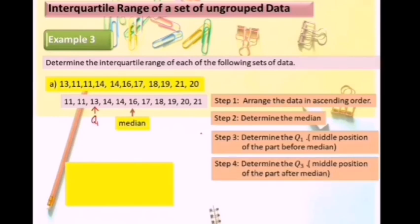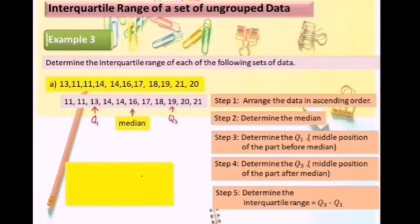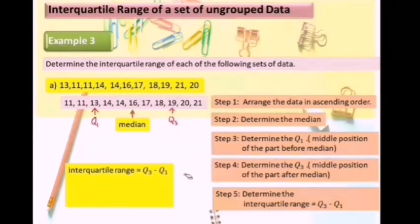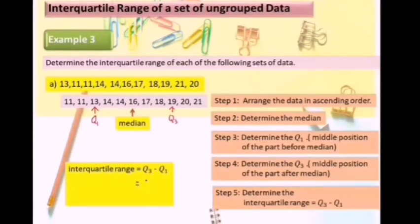Step 4: determine the third quartile. The third quartile is the middle position of the part after the median. Step 5: determine the interquartile range. Interquartile range equals third quartile minus first quartile, which equals 19 minus 13.